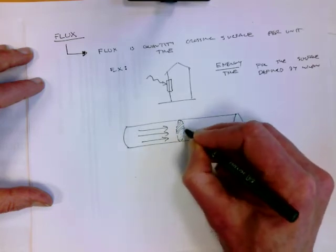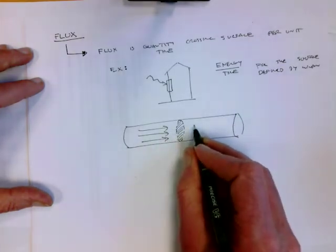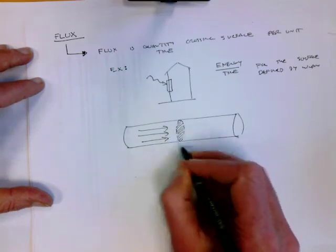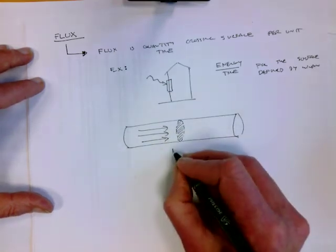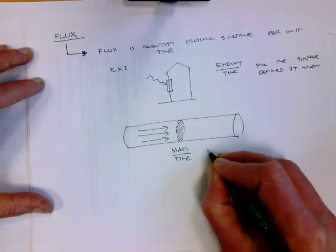I could ask the question, how many kilograms of water are passing through that surface per unit time? So I could think about a flux of mass, which would be mass per unit time passing through a surface.